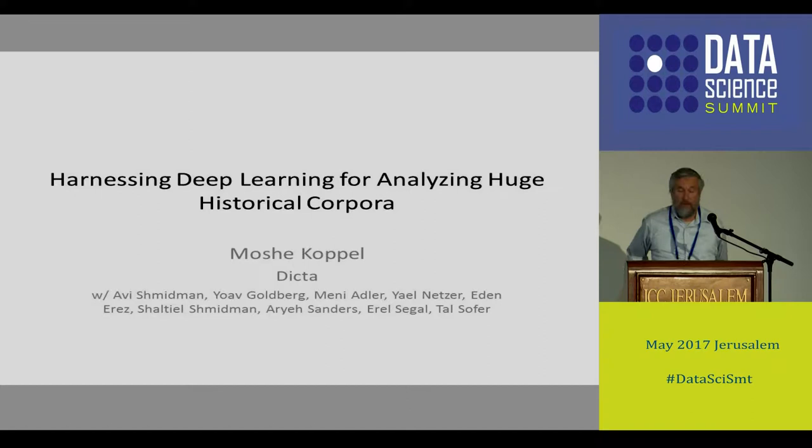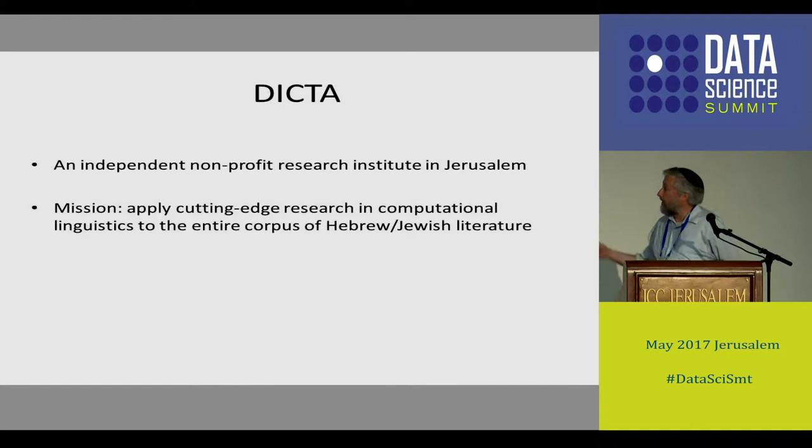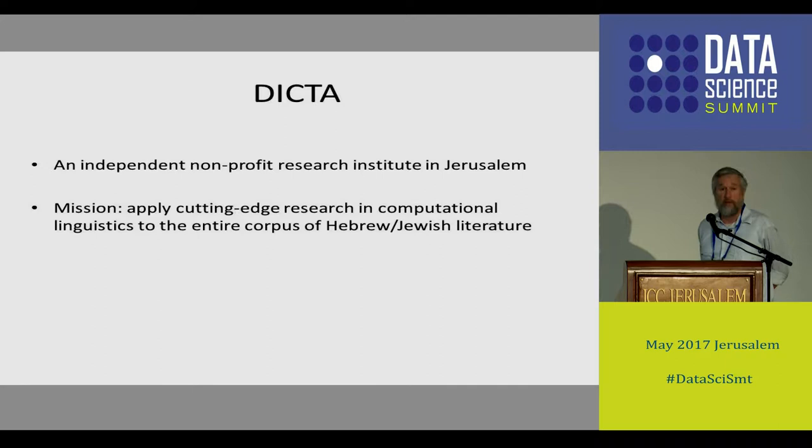Hi everybody. I'm Moshe Koppel. This is going to be joint work with a whole bunch of people, most of whom are at Bar Ilan. We're also all at Dicta. Dicta is an independent non-profit research institute in Jerusalem, and we try to take cutting-edge stuff in computational linguistics and apply it to the whole corpus of Hebrew and Jewish literature.